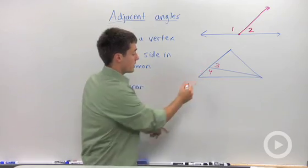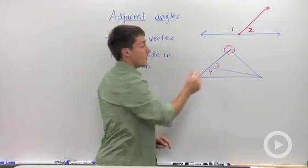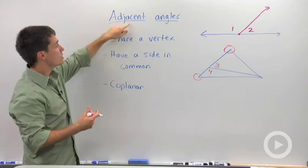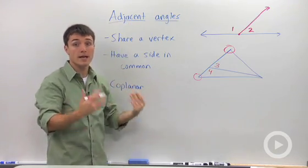These two angles right here, I'll circle them, are not adjacent because they do not share a vertex. So you can think of adjacent as kind of a word for next to.